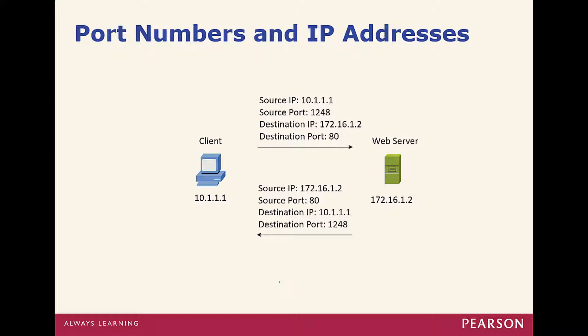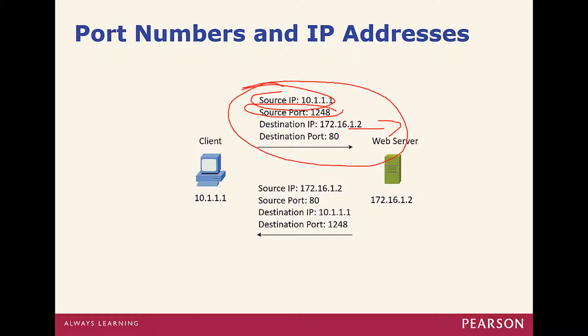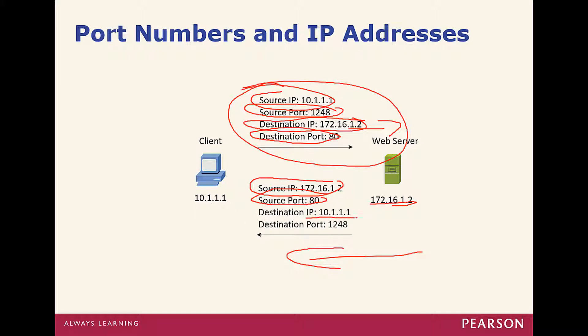Here's an example of a source IP and port number, and a destination IP and port number, as well as the return trip. Information is sent to the web server with your IP address, your communicating port, the destination address, and the destination port. The web server listens on port 80 and responds with the appropriate information, returning to the source on the reverse path.